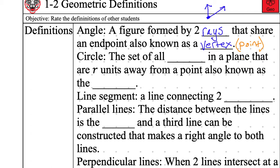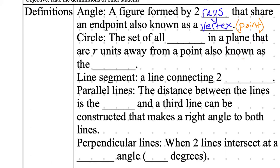Circle. We know what circles look like. Circle. The set of all blank in a plane that are R units away from a point. And that point is also known as the blank. So that first blank. The set of all something. And this word starts with a P. It is indeed points. The set of all points.